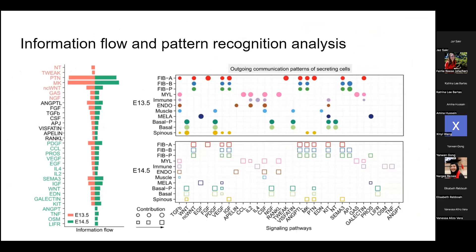They also compare conditions through a metric called information flow — the total of all communication probabilities for each cell type in a given condition for each signaling pathway. The information flow for E13.5 is present in the NT, Tweak, and Tweak signaling pathways, with no communication probability in 14.5 for those pathways. You see a lot of similarities and then some differences, and CellChat visualizes it quite nicely.